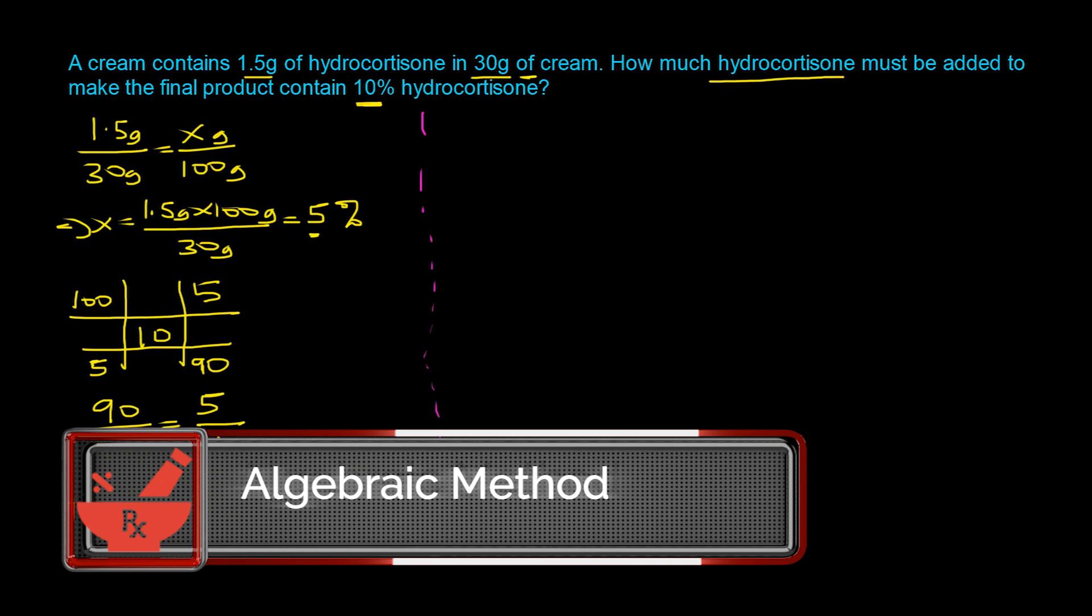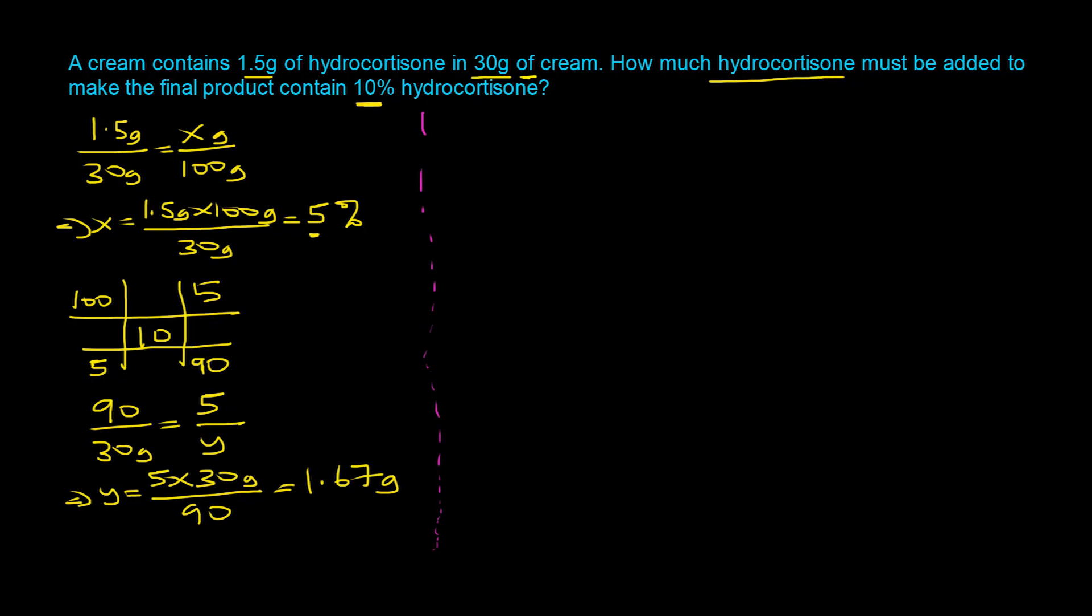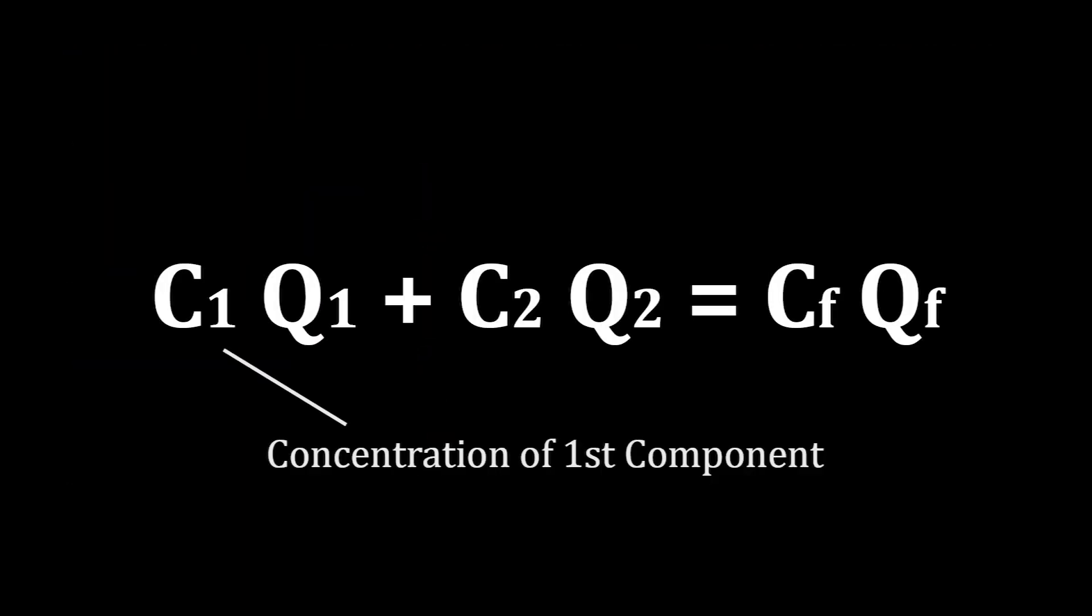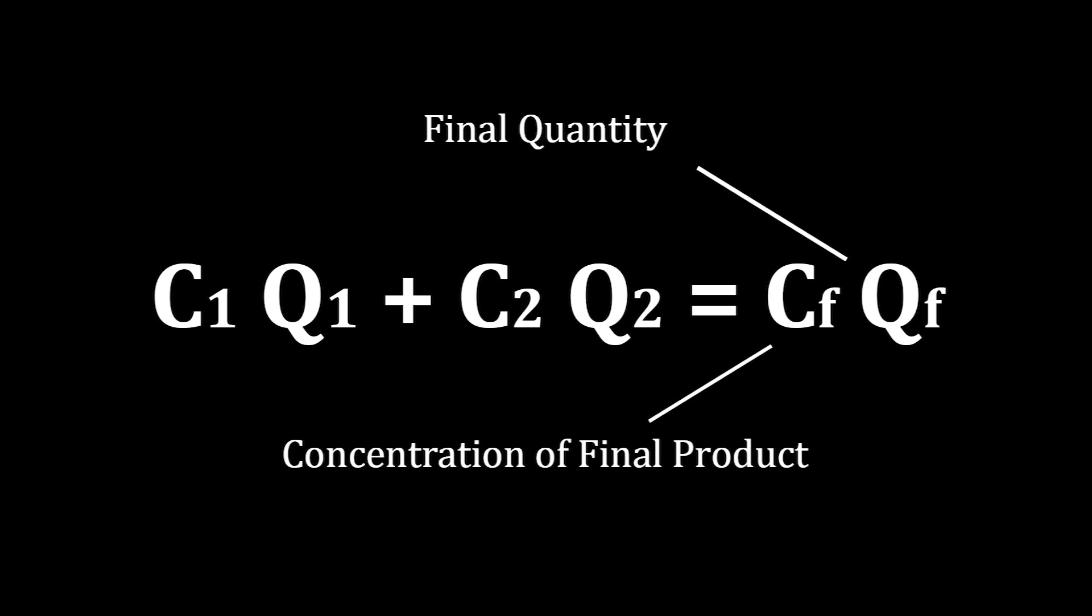Because we have two components mixing to form the final product, we're going to use the form of the algebraic equation: C1Q1 plus C2Q2 equals C final Q final. C1 is concentration of the first component, Q1 is quantity of the first component, C2 is concentration of the second component, Q2 is quantity of the second component, CF is concentration of your final product, and QF is the final quantity.